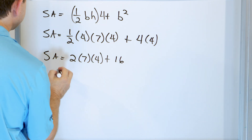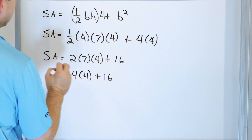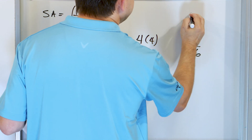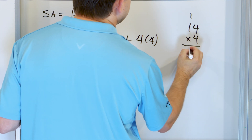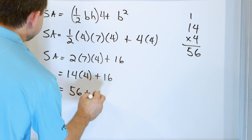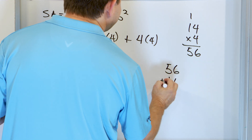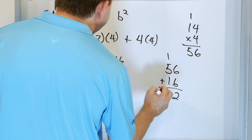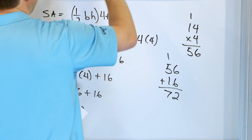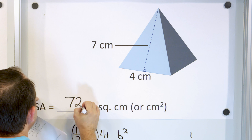14 times four: four times four is 16, carry one, four times one plus one is five — so 56. Plus four times four is 16. So 56 plus 16: you get 72. The units were centimeters, so this is 72 square centimeters.